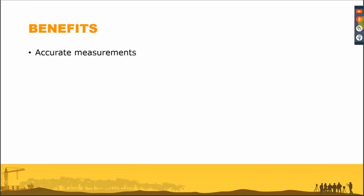The benefits of a robotic total station: accurate measurements — with the AIM technology we always measure the center of the prism, giving very good accuracy. Greater productivity — working from the pole, I do everything myself: I use the correct codes, I do the correct drawing, I know what I am measuring. With a manual total station using two operators, there is always the need to communicate. With a robotic total station, productivity is really increased.